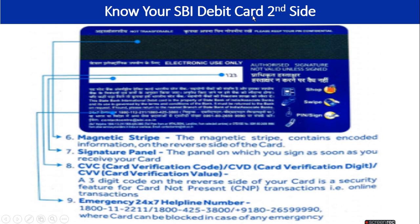Know your SBI debit card — second side. Now this is the second side of your debit card. The first information is the magnetic strip. This is the magnetic black strip, which contains encoded information on the reverse side of the card.